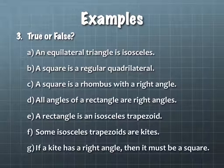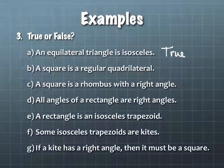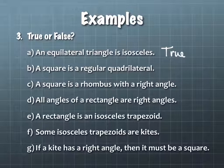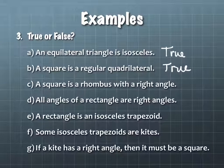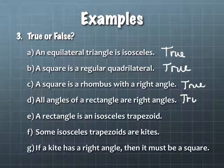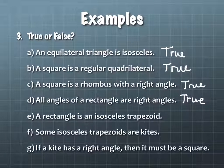True or false: an equilateral triangle is isosceles. True — we already covered that. A square is a regular quadrilateral. True — regular means equiangular and equilateral: four congruent angles and four congruent sides. A square is a rhombus with a right angle. True. All angles of a rectangle are right angles. True — the definition only says one right angle, but once you have one right angle and parallel sides, it forces the rest to be right angles.